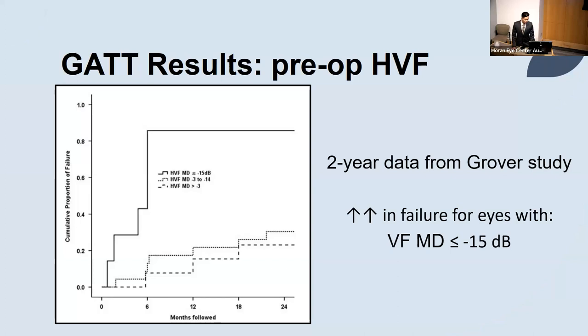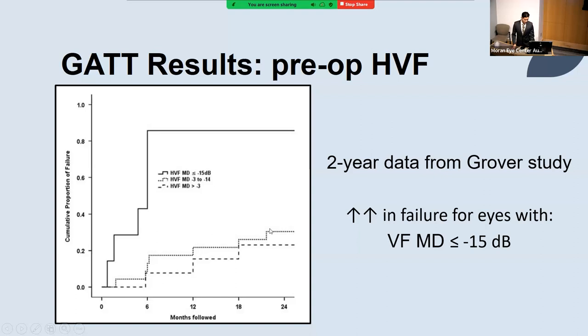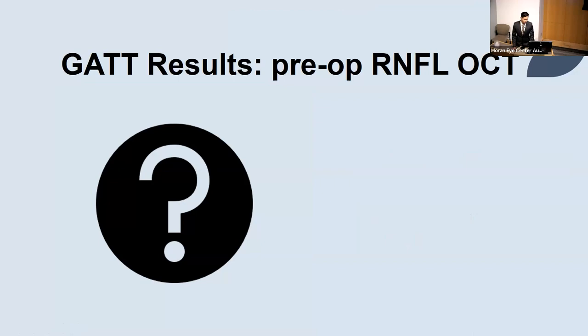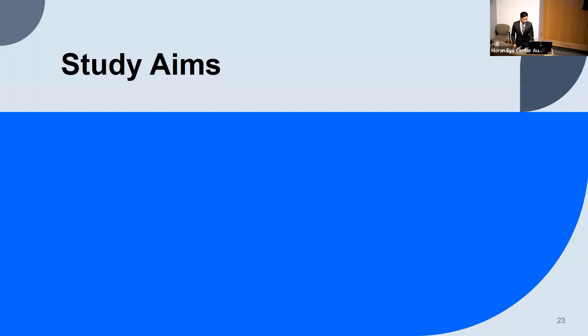Those patients — shown in the dark black line — had a huge increase up to over 80% failure just at six months, whereas everyone below that threshold did relatively well. This was a great way to restratify patients. What we haven't seen yet is similar data for the RNFL scan — no studies have looked at that. Especially as these procedures are done for patients with more mild glaucoma who might not have significant visual field findings, this could be a useful additional assessment tool.